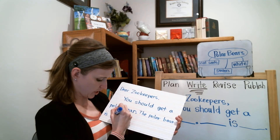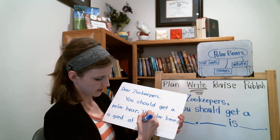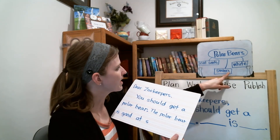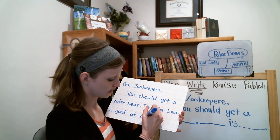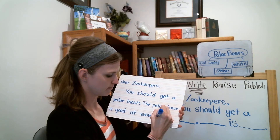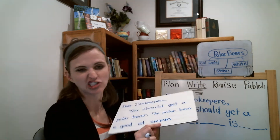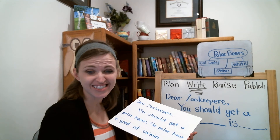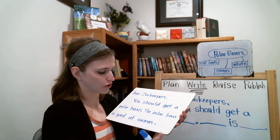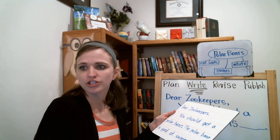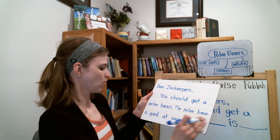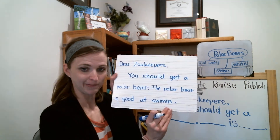I'm going to write: 'The polar bear is good at swimming.' I see the word 'swim' here so I'll use that to help me spell swimming — S-W-I-M-M-I-N-G. I'm not sure about the spelling, but I'll leave it like that because right now we don't have to worry about all our spelling being right — we'll fix it later.